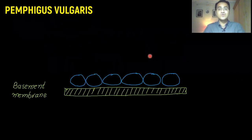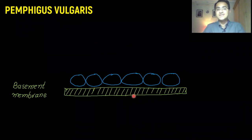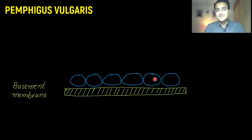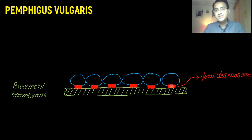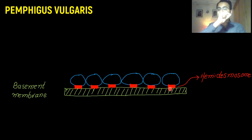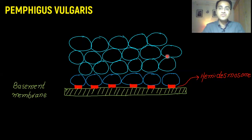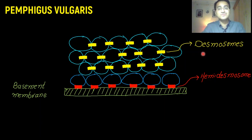What are desmosomes? To understand that we have to understand the structure of skin. There is a basement membrane within the skin, and over that basement membrane are the skin cells. Those skin cells are attached to the basement membrane by hemidesmosomes — a glue that sticks the cells to the basement membrane. The cells lying on top of the basement membrane are held with each other by another type of glue called desmosomes, which hold the cells together.